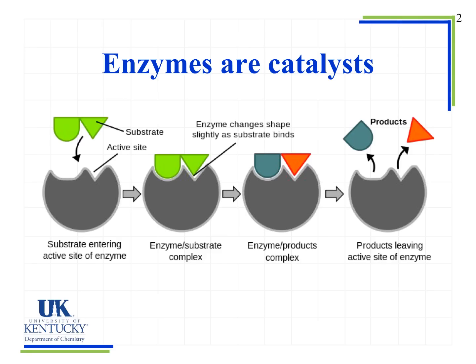One of the most important things to know about an enzyme is that they are a catalyst. When we look at structural features of an enzyme, they look just like proteins — all the levels of protein structure: primary, secondary, tertiary, and quaternary. Enzymes are just a subgroup of all proteins with a special job: to catalyze a chemical reaction.